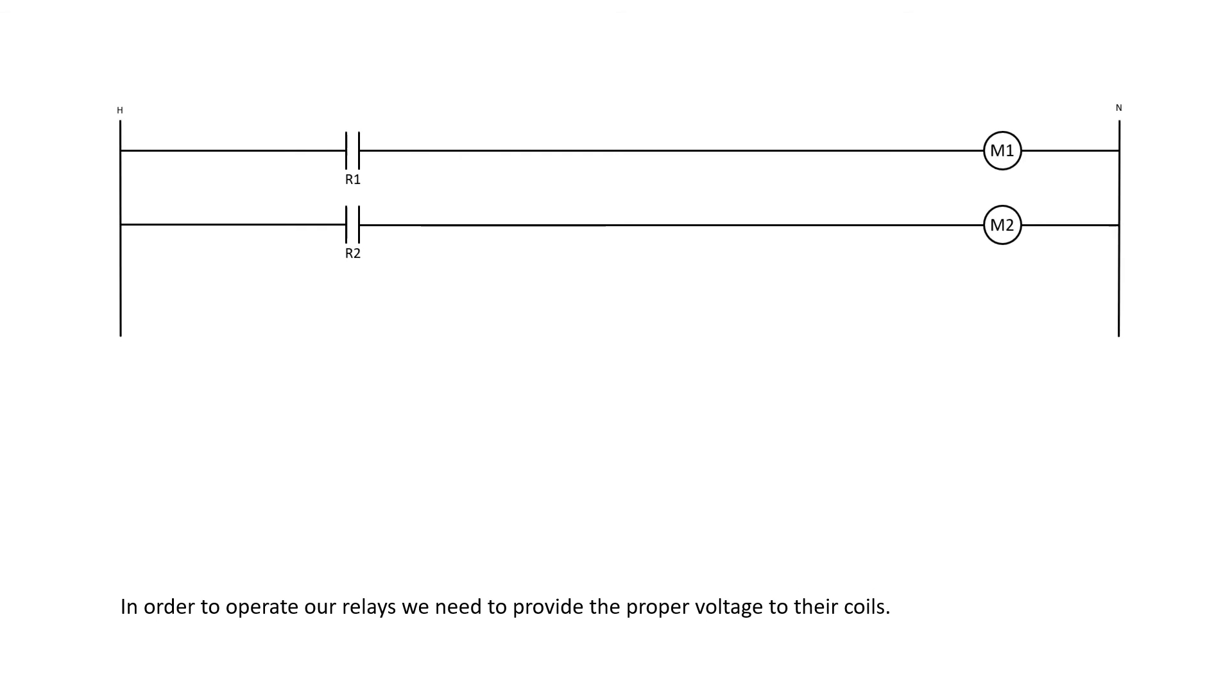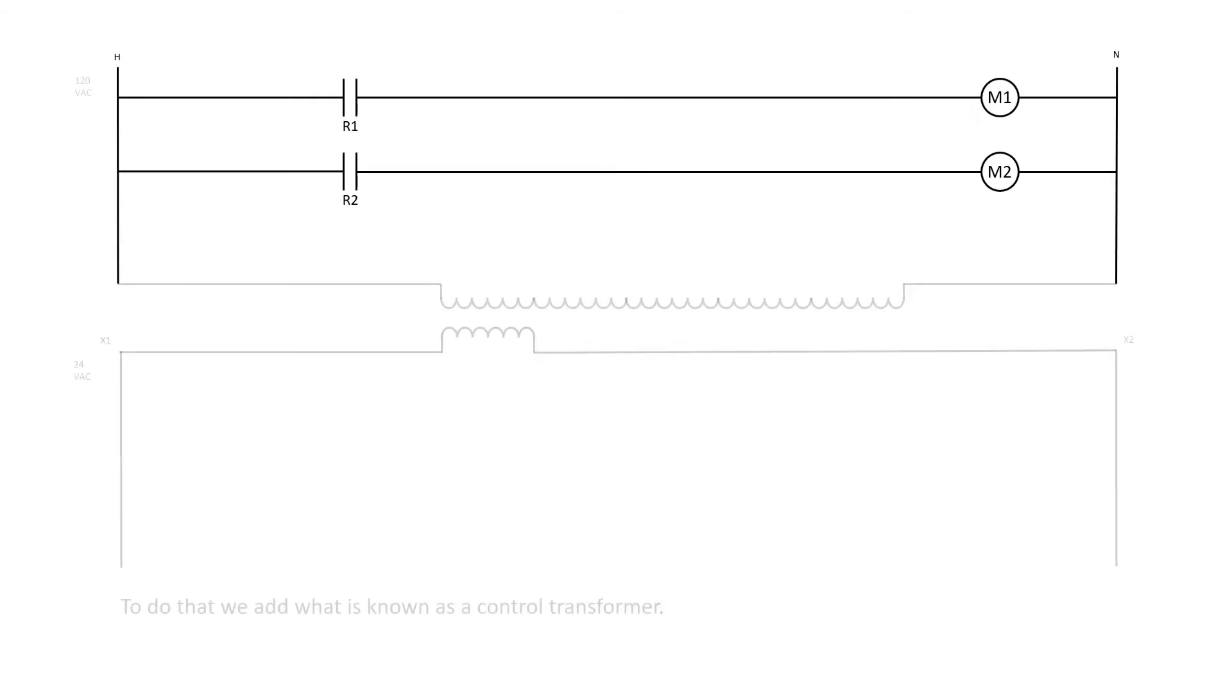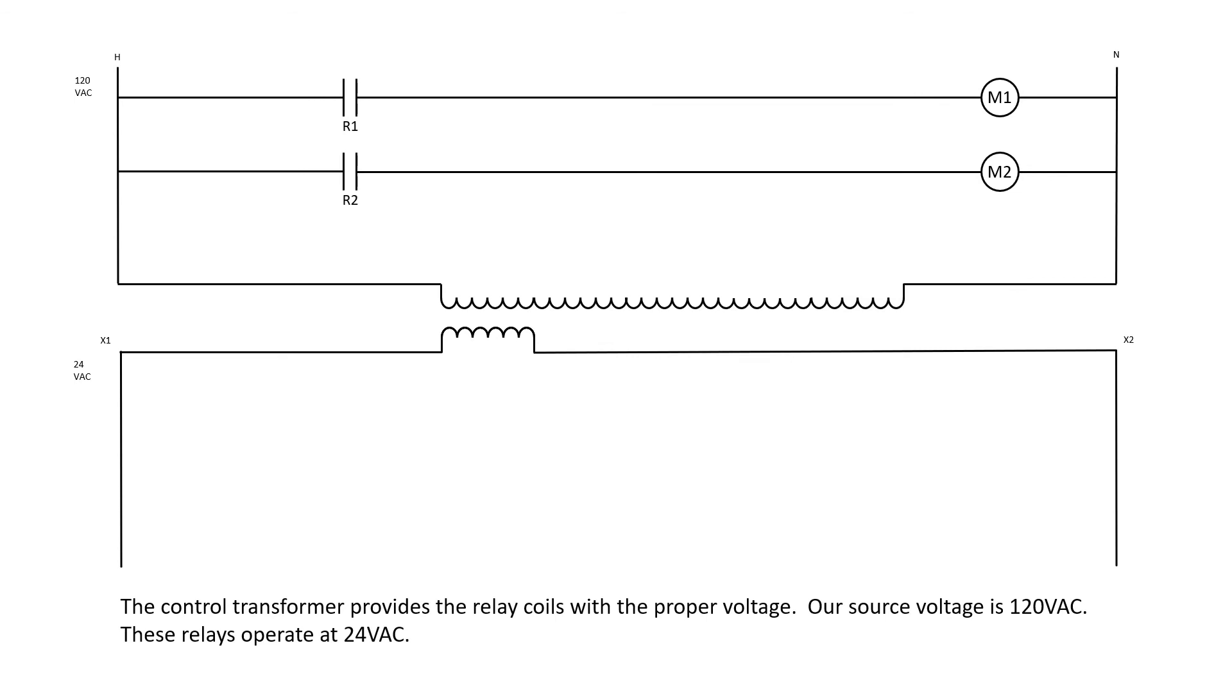In order to operate our relays, we need to provide the proper voltage to their coils. To do that, we add what is known as a control transformer. The control transformer provides the relay coils with the proper voltage.